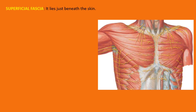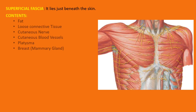In the thoracic region, just beneath the skin we have the superficial fascia, which contains fat, loose connective tissue, cutaneous nerves, cutaneous blood vessels, the platysma, and the breast.